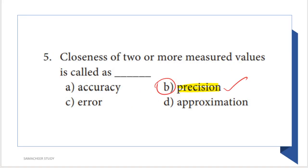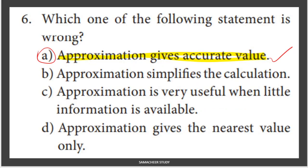Next question: closeness of two or more measured values is called what? The options include accuracy, precision, and error. Precision refers to the closeness of two or more measured values to each other. So the answer is option B — precision.